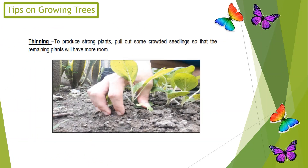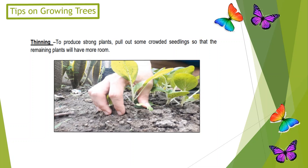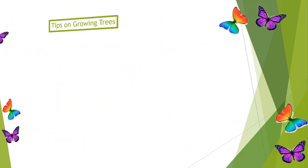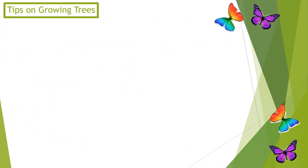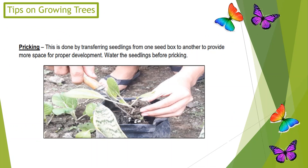Number 5: Thinning — to produce strong plants, pull out some crowded seedlings so that the remaining plants will have more room. Number 6: Pricking.